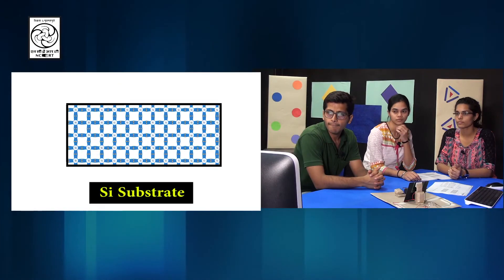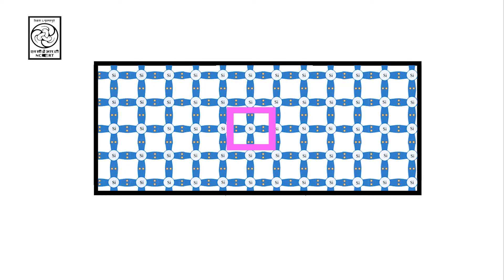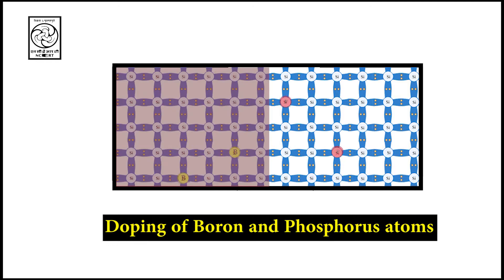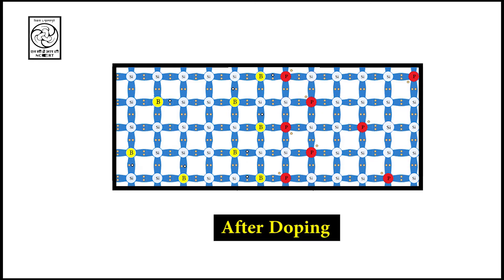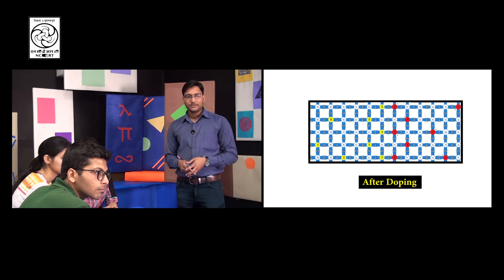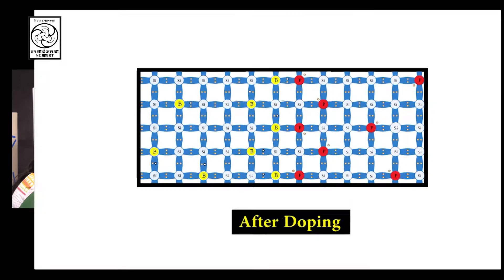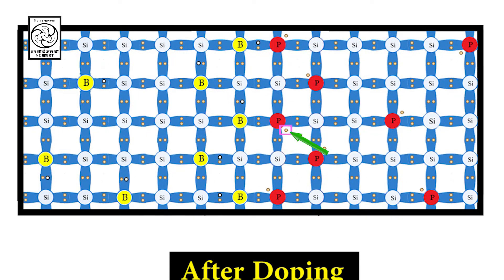Look at the computer screen. Let's take a silicon substrate in which every silicon atom makes four covalent bonds with other silicon atoms. Boron atoms are doped on one side of the silicon substrate and phosphorus atoms on the other side by the diffusion process. Some silicon atoms are replaced by boron and phosphorus atoms in different parts of the silicon substrate. You can also see it on the computer screen. You know, phosphorus atoms have an extra free electron and boron atoms have a vacancy of electron which is called? Sir, it is a hole. Very good, Pinky.